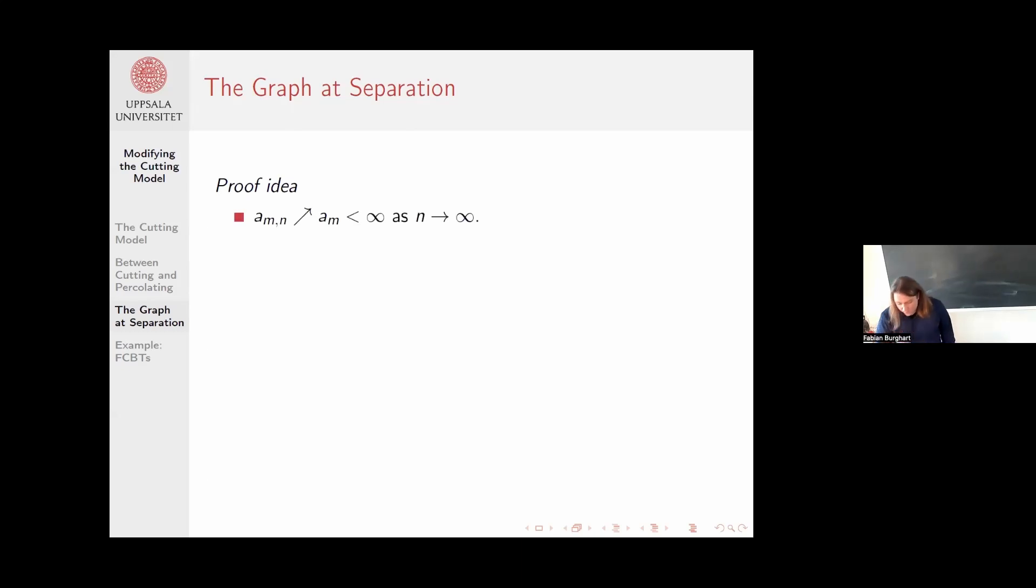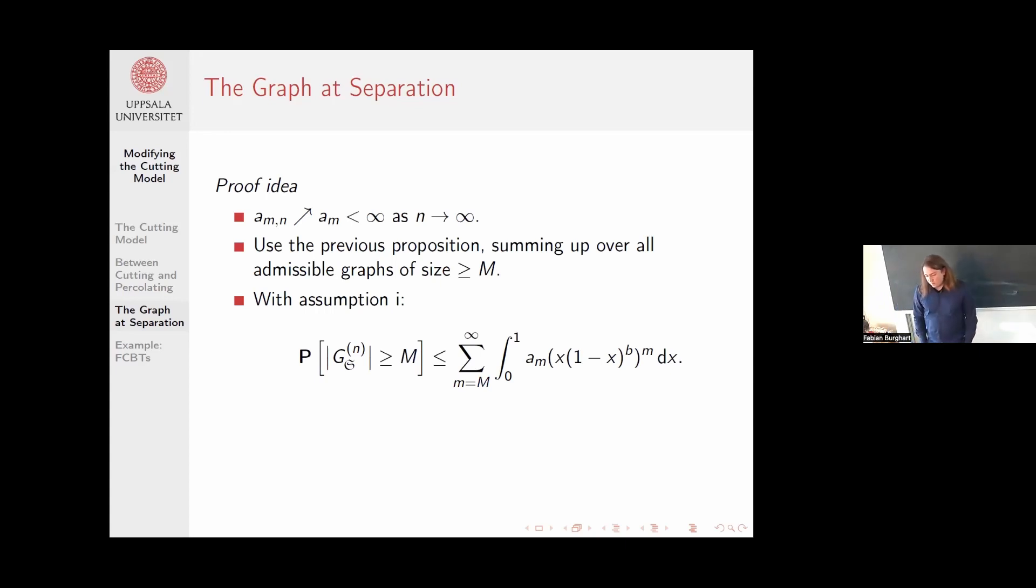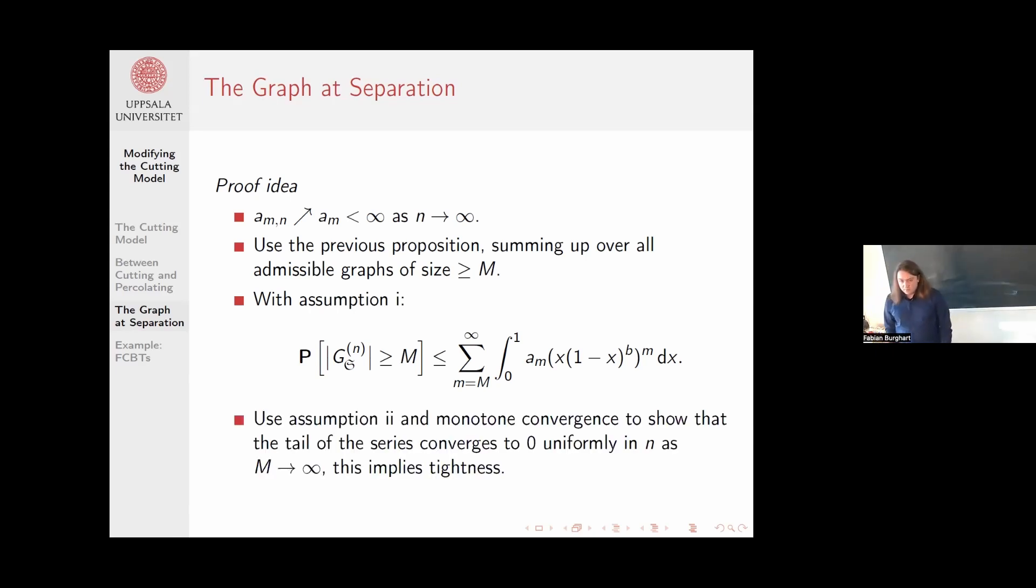So let's quickly talk about the proof idea. First of all, I defined this limit, but it's not clear that the limit exists or is finite, but that is true. Then as I said earlier, we use the last proposition and sum over all admissible graphs of size at least M. With this expander type condition and some rough estimates to the integral, we get to this expression. If I swap summation and integration on the right hand side, I essentially get this function F and the integral from assumption two. So I know the right hand side is finite, which means the series must have tails that converge to zero uniformly in N. This gives tightness.